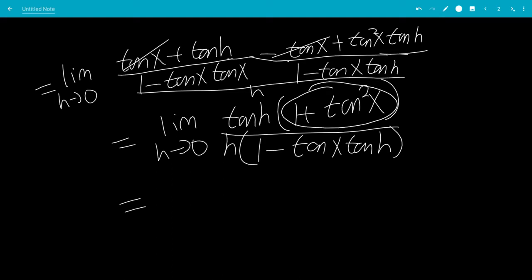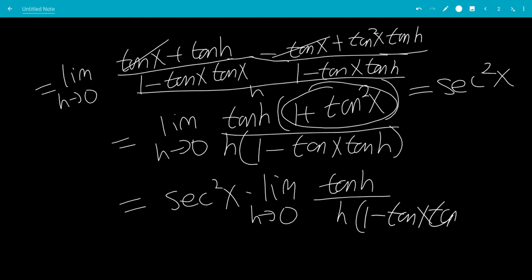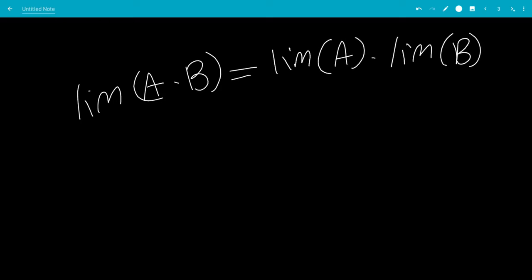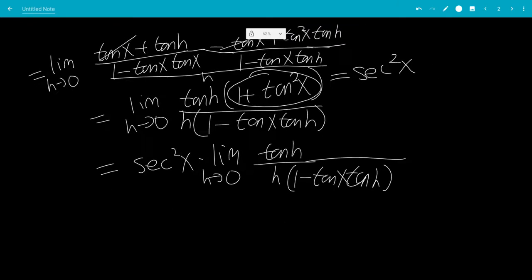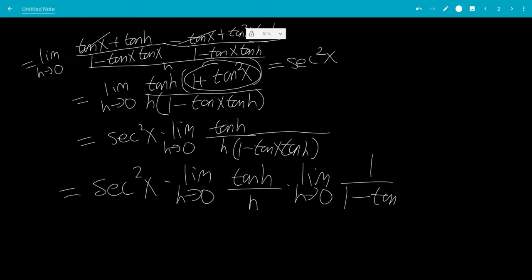Now, 1 plus tangent squared x is equal to secant squared x. So this becomes secant squared x, which we can move out of the limit. We then have the limit as h goes to 0 of tangent h over h, times the limit as h goes to 0 of 1 over 1 minus tangent x tangent h.